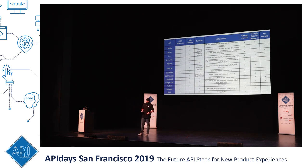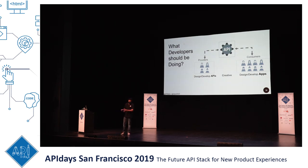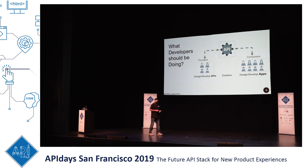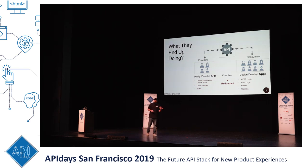So the problem comes up. What developers should be doing with APIs — there are two kinds of developers. The first set is sitting in-house within your company, and the other set is the consumers, the app developers who are using your APIs. The in-house API developers should be designing and developing APIs, which is the creative bit, while the consumers should be designing and developing apps. But what they end up doing is writing code samples and developing SDKs again and again.